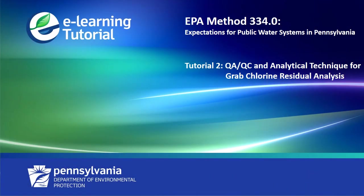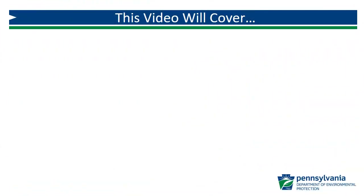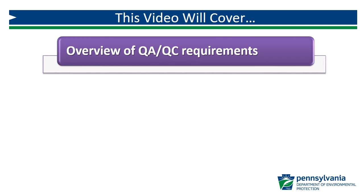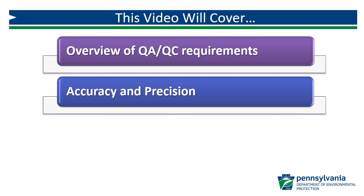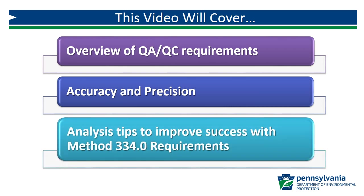Welcome to the second video in a series of video tutorials on EPA Method 334.0, Expectations for Public Water Systems in Pennsylvania. Here is what you'll learn about in this video. We will begin with an overview of QAQC requirements and what QAQC really means. Next, we will differentiate between the terms accuracy and precision. Finally, we will cover some chlorine residual analysis tips to improve success with Method 334.0 requirements.